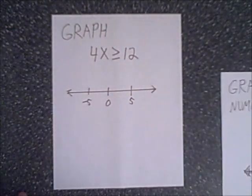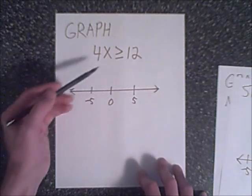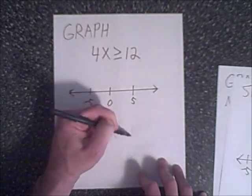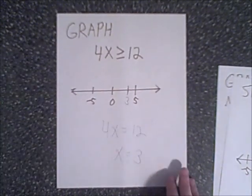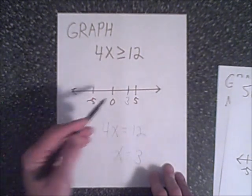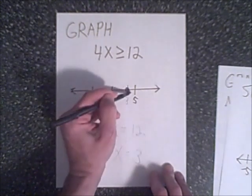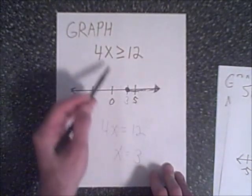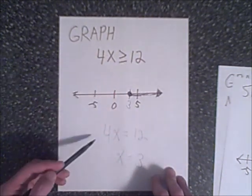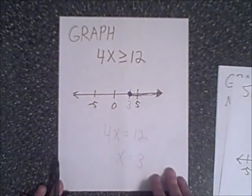The third example is 4x ≥ 12. Solve it first by treating it as equal: 4x = 12 gives x = 3, our critical value. Since it's greater than or equal to, we use a filled circle at 3 because it includes equals. Then since it's greater than or equal to, we shade to the right toward higher values. Testing x = 5: 4 × 5 = 20, which is greater than 12 — correct. Testing x = 0: 4 × 0 = 0, which is not greater than 12, so the left side is not shaded.